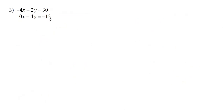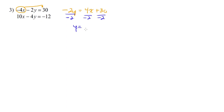Looking at number 3, neither equation is solved for x or y. We want to solve for a variable without getting fractions. In the first equation, if we solve for y: negative 4x over 2 and 30 over 2 give whole numbers, so no fractions. We move negative 4x to the other side, giving negative 2y equals positive 4x plus 30, then divide everything by negative 2. Now we have y equals negative 2x minus 15. We substitute that into the second equation: 10x minus 4 times (negative 2x minus 15) equals negative 12.